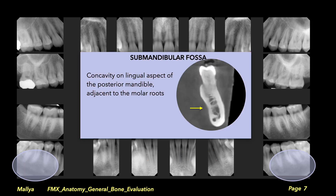Similarly, the submandibular fossa is a bony concavity located in the posterior mandible. This region projects as a radiolucency apical to the mandibular molar roots. Due to its extent and often marked appearance, it may be mistaken for pathology.